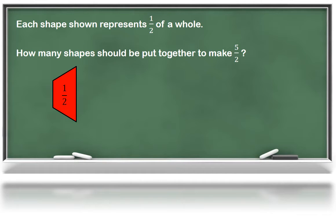Your child will also work with fractional amounts greater than one whole. You may remember calling these types of fractions improper fractions. A typical task might include something like this. Each shape shown represents one half of a whole. How many shapes should we put together to make five halves? We know one of these trapezoids is a half, so we can just count out five halves. I already have one half, two halves, three halves, four halves, and five halves.